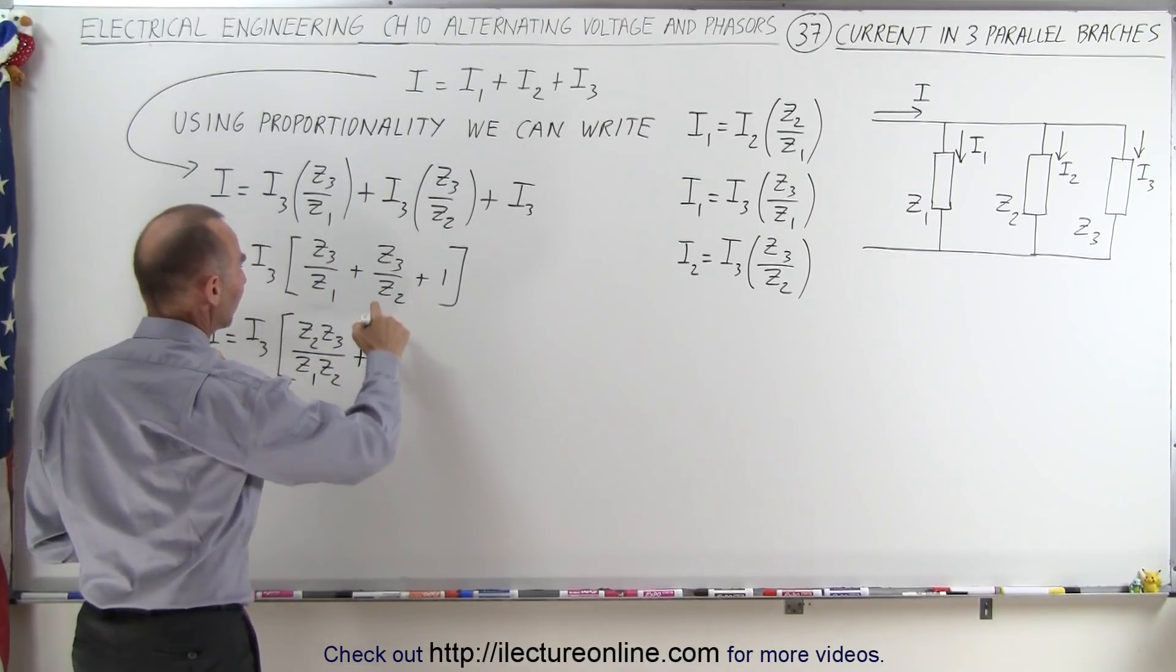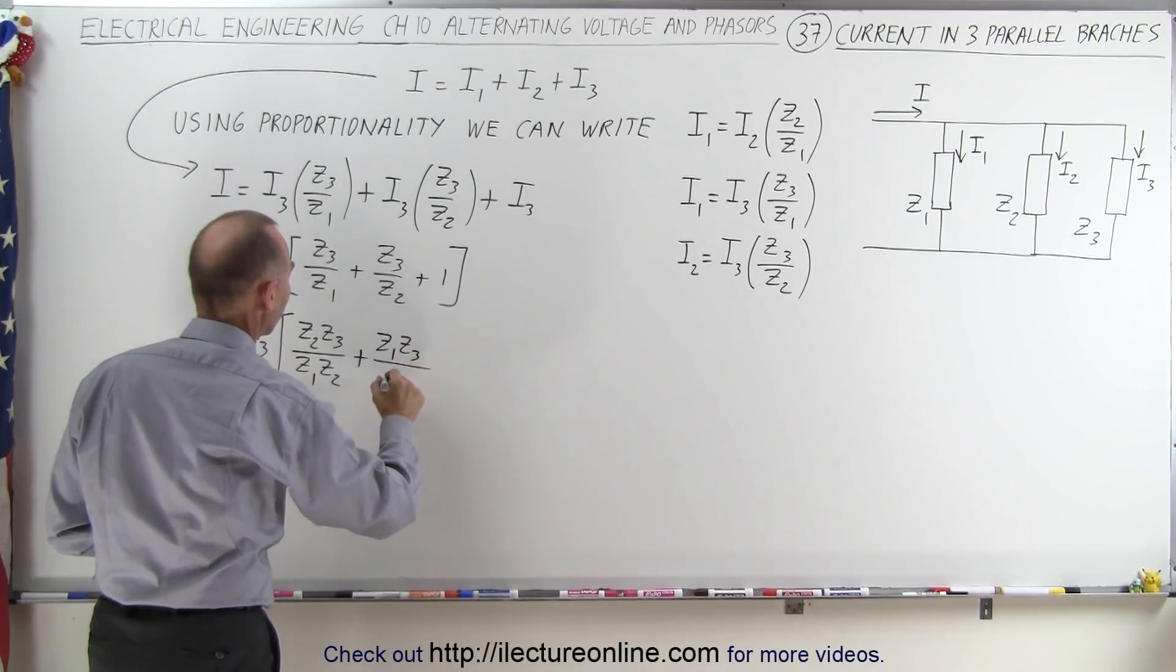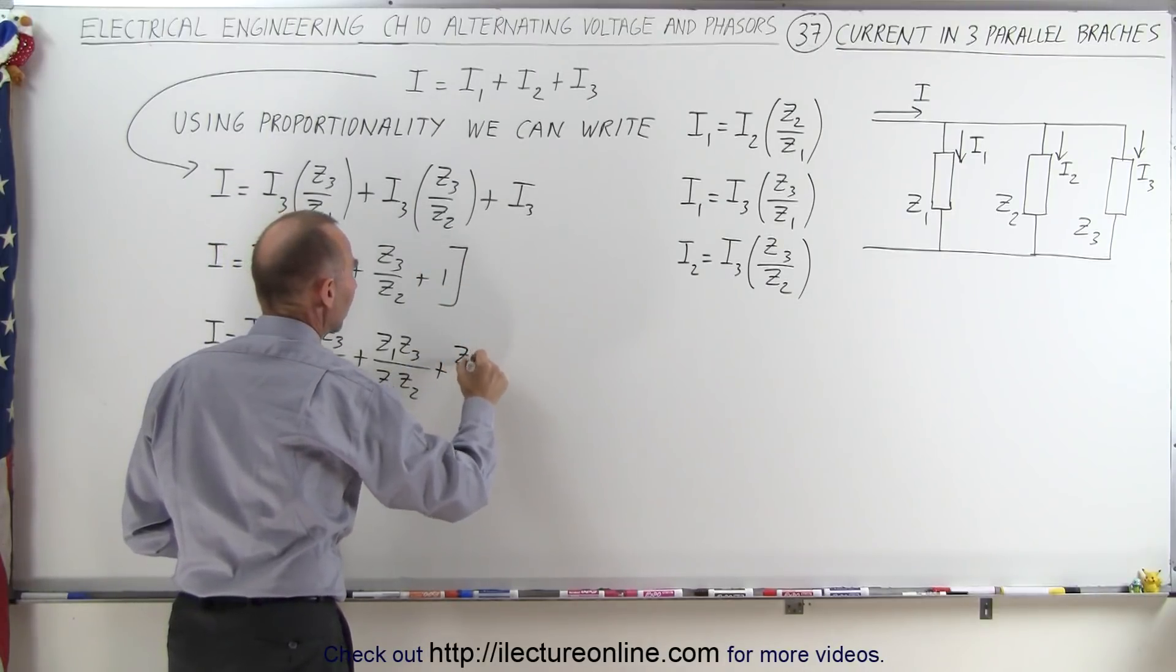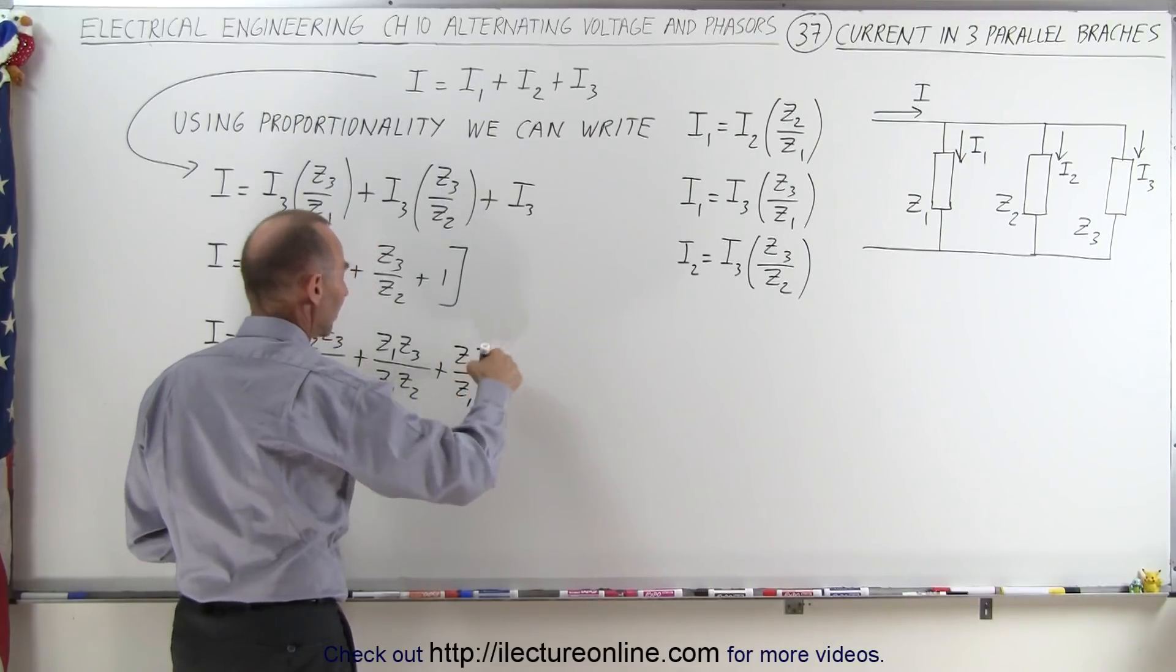Plus, here I'm missing a Z1, so I'm multiplying both the top and the bottom by Z1, so we get Z1 times Z3 divided by Z1 times Z2. And finally here, I have to multiply both by Z1 and Z2 divided by Z1 and Z2. Again, that's equal to 1.